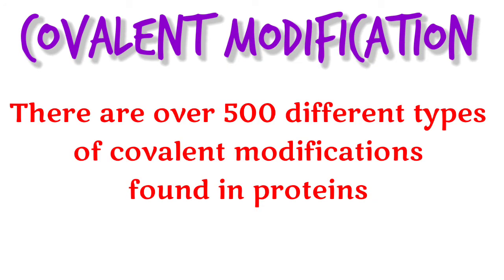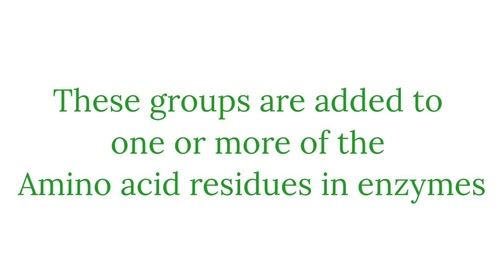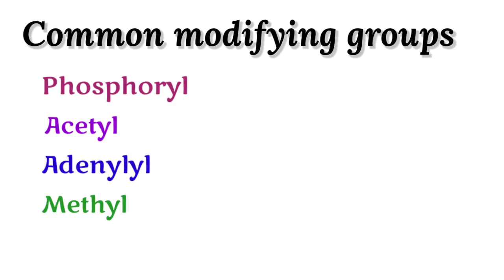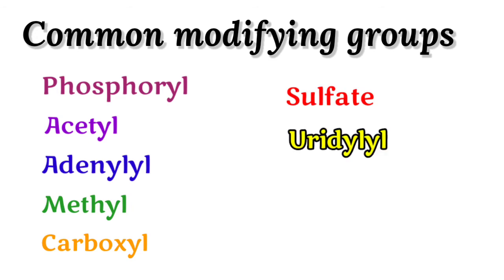There are over 500 different types of covalent modifications found in proteins. The groups used in covalent modification are added to one or more amino acid residues in the enzymes or proteins. The most common modifying groups involved in covalent modification include: phosphoryl, acetyl, adenylyl, methyl, carboxyl, sulfate, and uridyl groups.